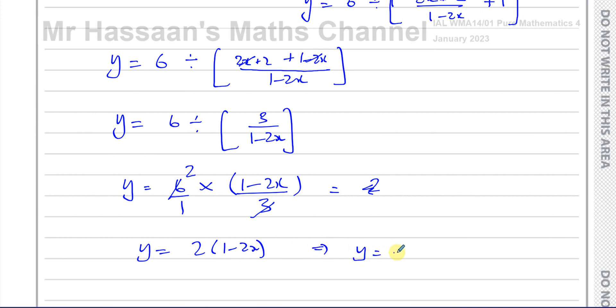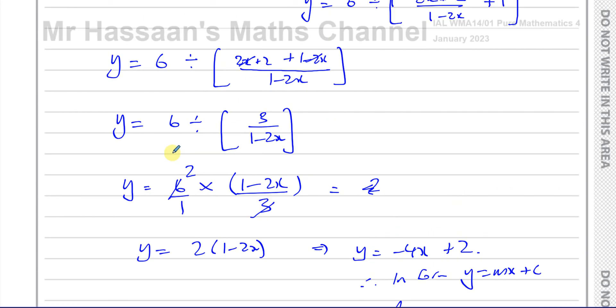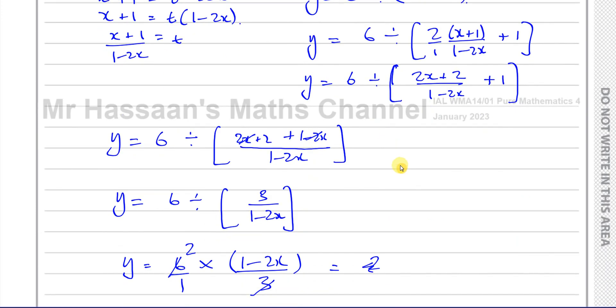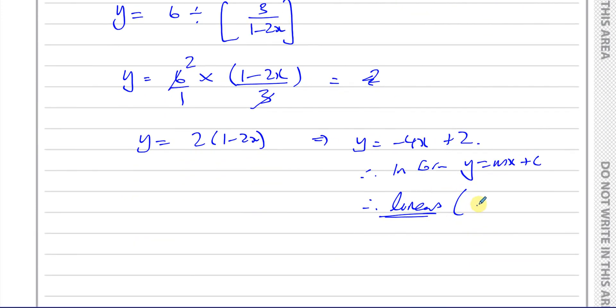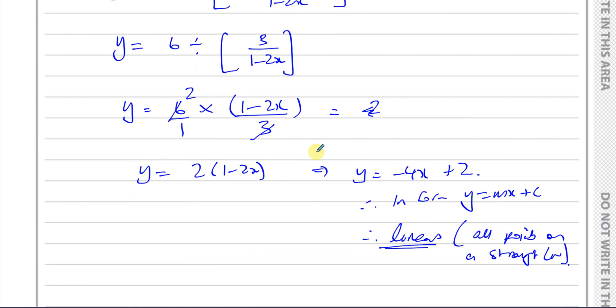We could write Y equals -4X + 2. Therefore, we can see it's in the form Y equals MX plus C. Therefore, we can say it's linear, and that's what we had to show—they asked to prove that it lies on a straight line. All points lie on a straight line. So there we have the answer to part A of question number 2: Y equals -4X plus 2.